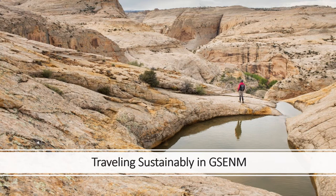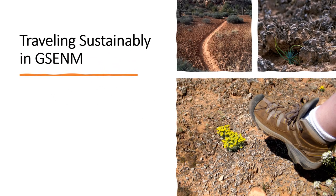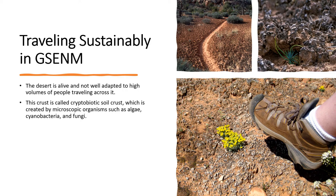Trail ambassadors should also convey to visitors that it is important to travel and camp on durable surfaces. The amazing geology of GSENM provides habitat structure for a variety of ecosystems. And even though the landscape is dominated by rock, the desert is fragile. Thankfully, the rocks and washes in this landscape, along with designated trails and roads, provide visitors with ways to navigate the desert sustainably. The desert is alive and not well adapted to high volumes of people traveling across it. While on the monument in lower-impact areas, you may notice the ground is covered in a dark crust called cryptobiotic soil crust, which is created by microscopic organisms such as algae, cyanobacteria, and fungi. The bacteria within the soil releases a gelatinous material that binds soil particles together in a dense matrix, making a hardened surface layer of living organisms and inorganic soil matter.